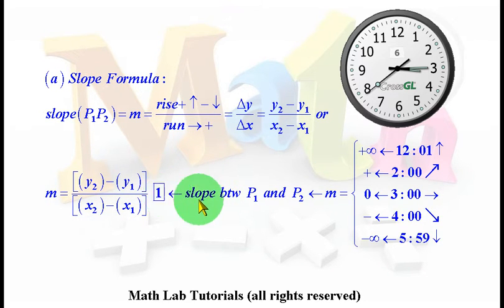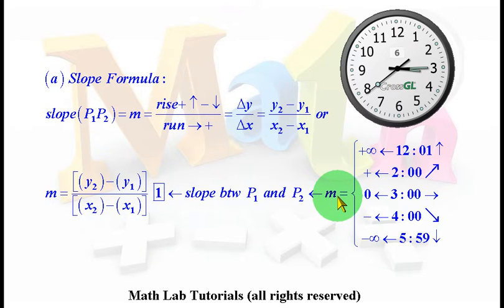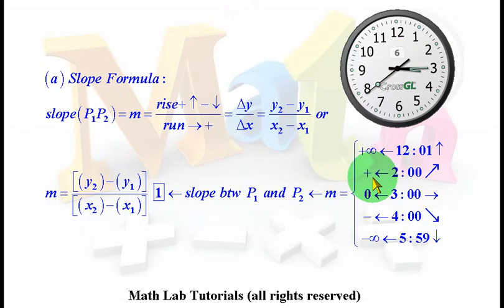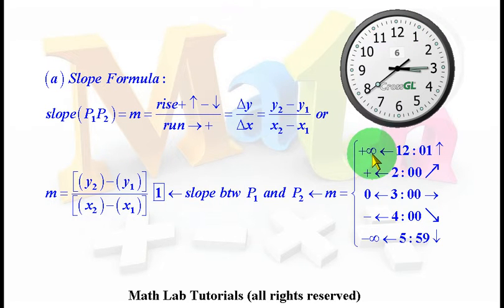We call that equation 1, indicating the slope between P1 and P2. Referring again to the clock, if the center of the clock is the origin, drawing a line segment from the origin to 3 o'clock gives a horizontal line with slope zero. Drawing a segment from the origin to 2 o'clock is a forward slash, so the slope is positive. Drawing a segment to the 12:01 mark gives a very, very steep forward slash, so the slope is positive infinity.